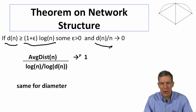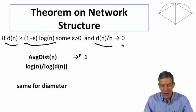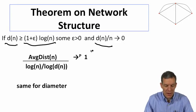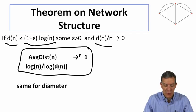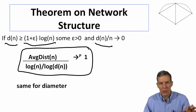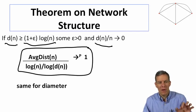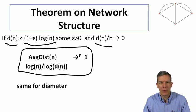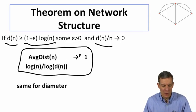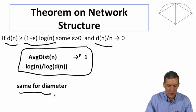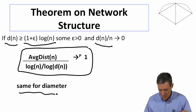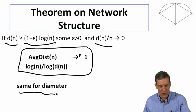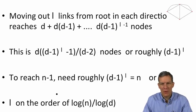And if the degree wasn't becoming too large, so that the degree relative to n is vanishing, then when we look at the average distance, with probability going to 1, the ratio of the average distance compared to log n over log d is going to 1. And the same actually holds for the diameter.